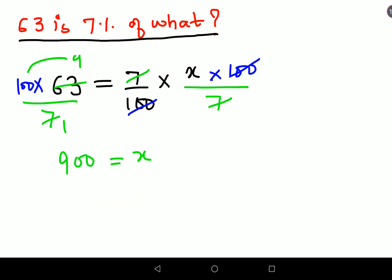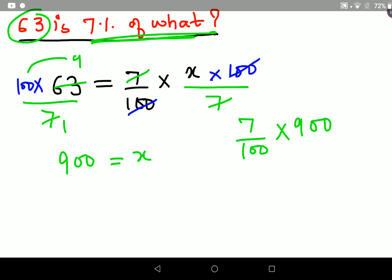But let's see whether that is the exact value. What we'll do is let's write this over here in this particular format: 7 upon 100 into the value of x, that is nothing but 900. Let's see whether that gets you the value of 63. If that gets you the value of 63, then what you have done is absolutely correct.